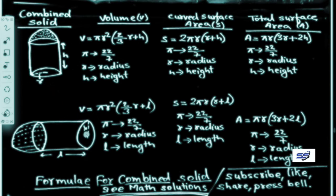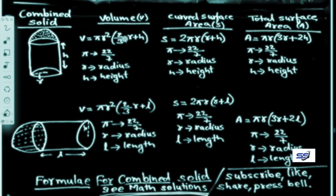To find the volume of this combined figure, the formula is V = πR²(2/3 R + H), where π = 22/7, R is the radius, and H is the height. Using this formula, we can easily find the volume of the combined solid figure.